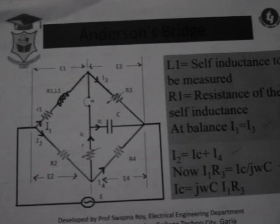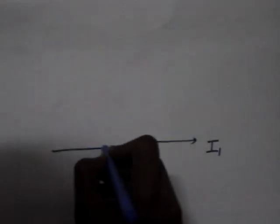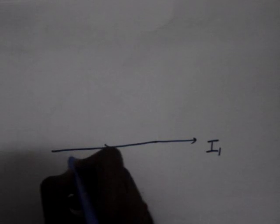So now I will draw the phasor diagram. So first drop is, this one is the reference line, this is the current I1. Now I1, we have in the first arm, I1 into small r1 plus capital R1.